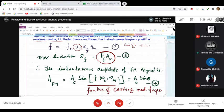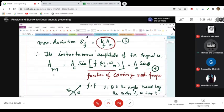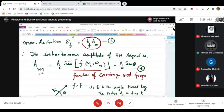The instantaneous amplitude of the FM signal is given by a_FM equals a_c times sine of omega_c, omega_m. This is called a function of carrier and modulating signal frequencies. It is a function of not just omega_c or just omega_m, but it is a function of combination of two frequencies. Therefore, it is written as omega_c and omega_m.